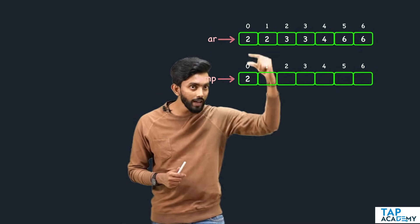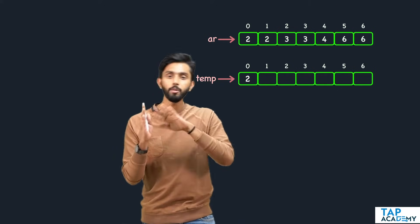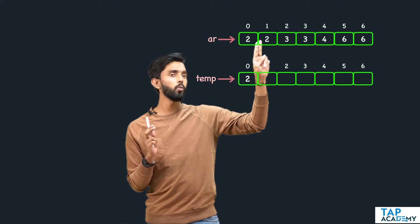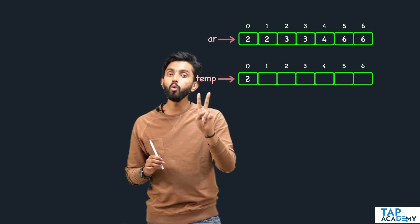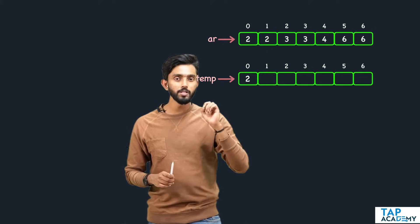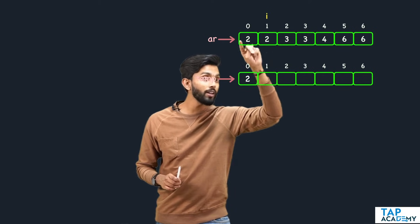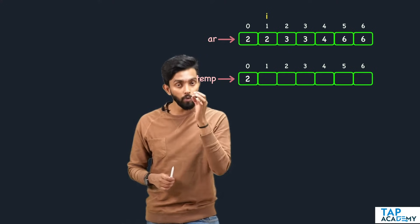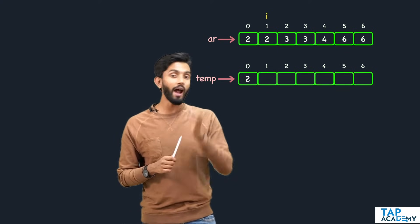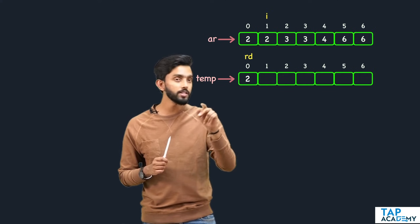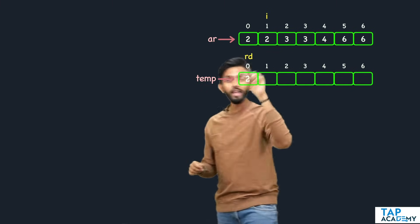First and foremost, whatever the first element of the array is, I will store it inside temp as-is. Obviously the first element has no concept of duplicates — duplicates come after it. Then I appoint two pointers: 'i' placed at the second element (index 1) of the original array, and 'rd' (remove duplicates) placed at the beginning of the temp array.